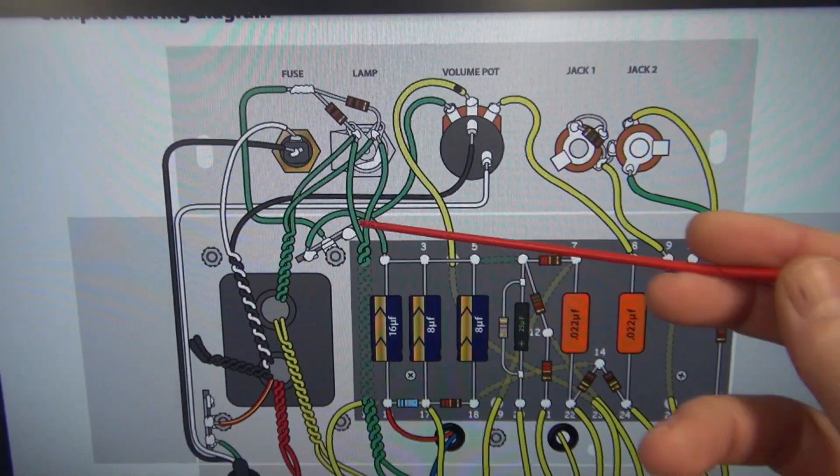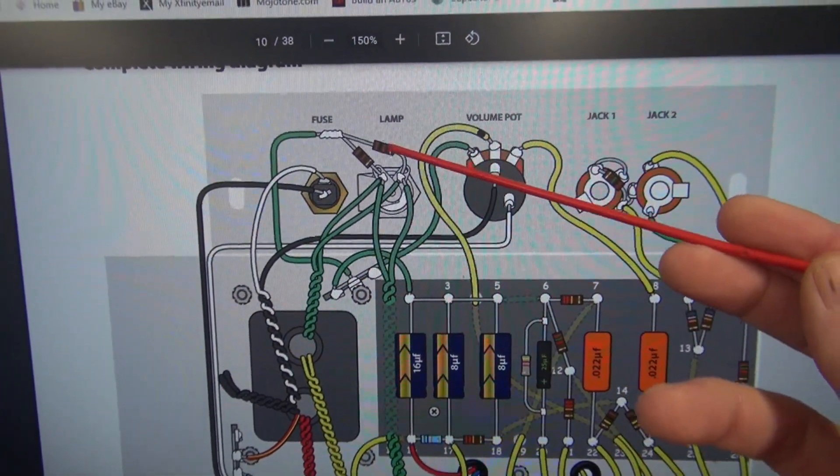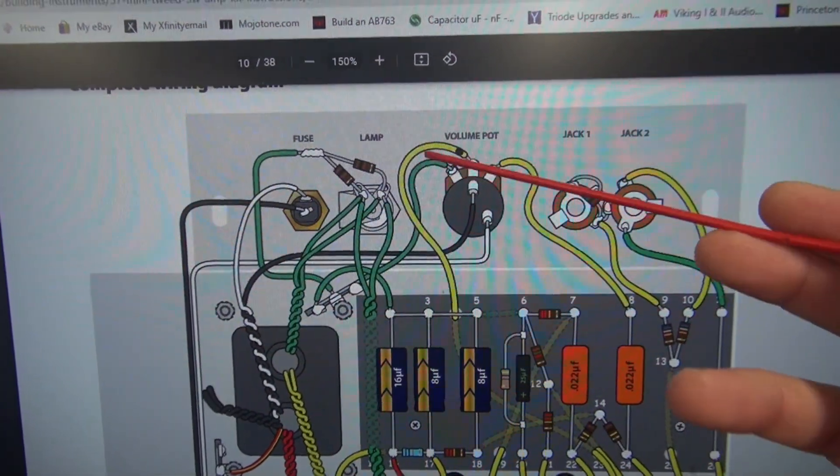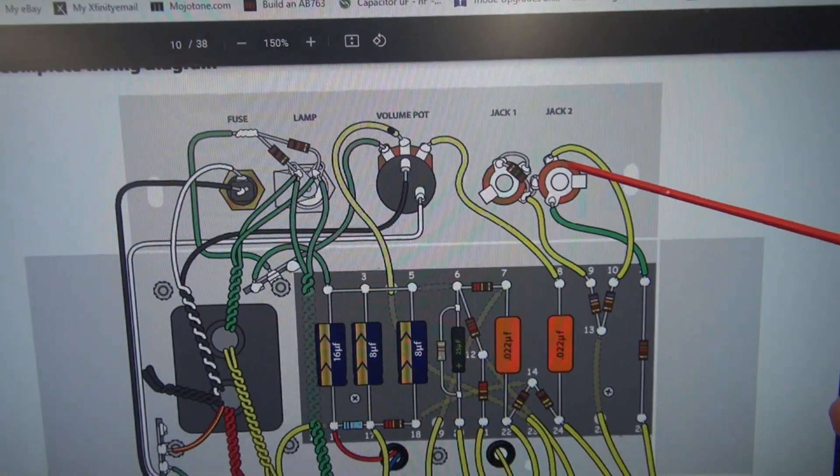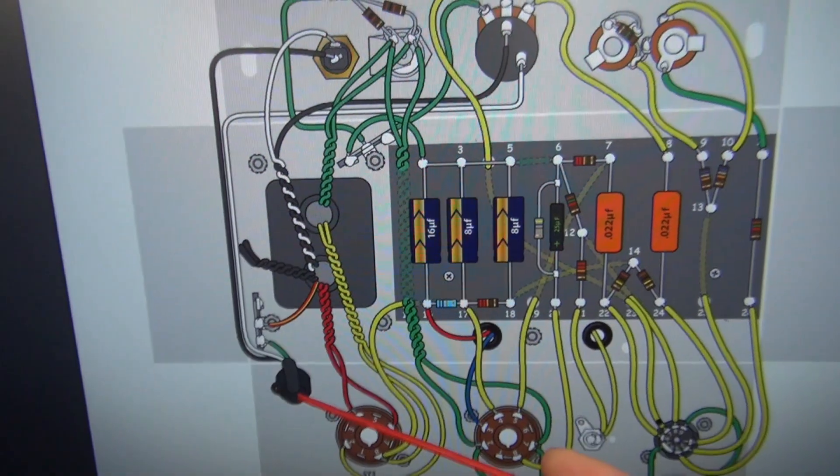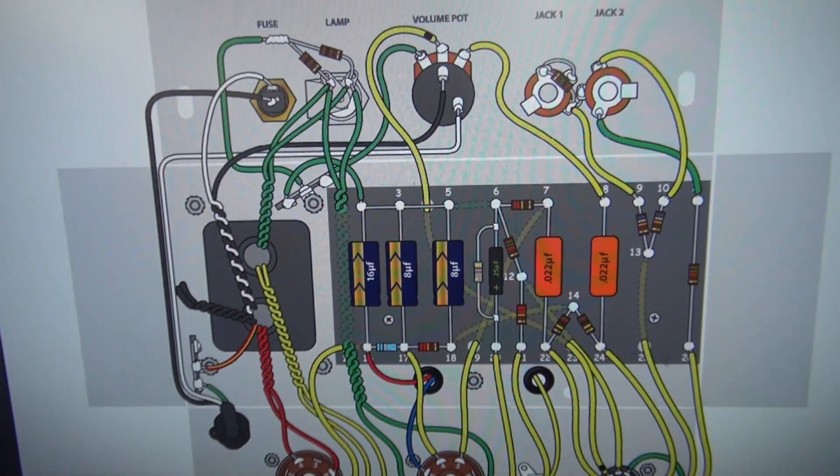So you can see our little grounds here going to this terminal strip, going up to the 200 ohm resistors. There's one to the volume pot and one over here going to the input jack. And of course, the power ground itself. Alright, let's buzz it out.